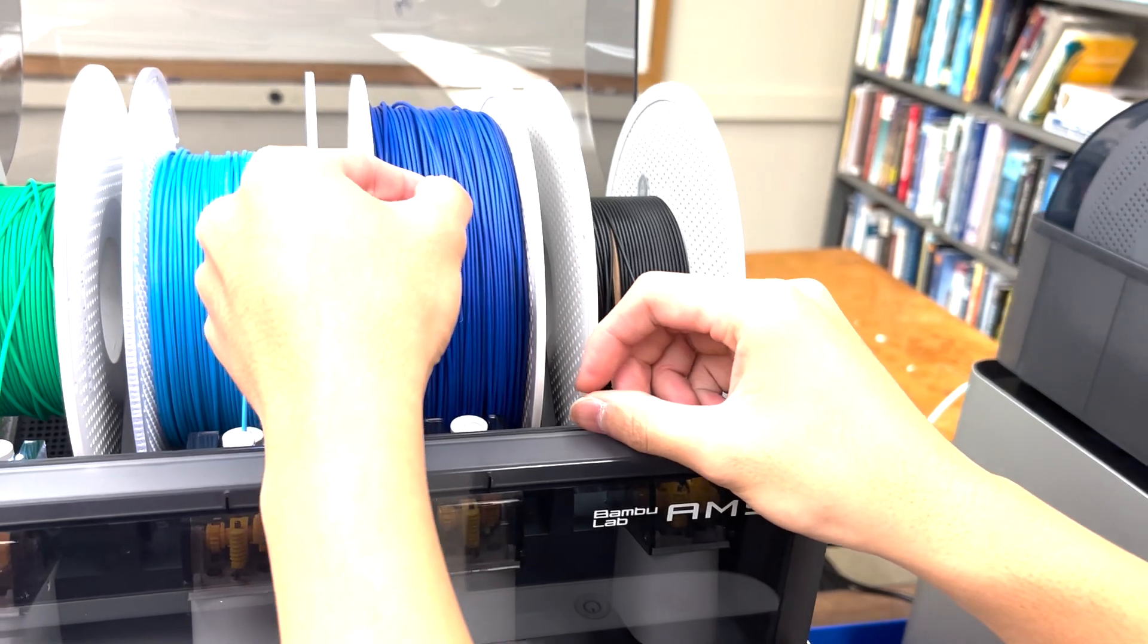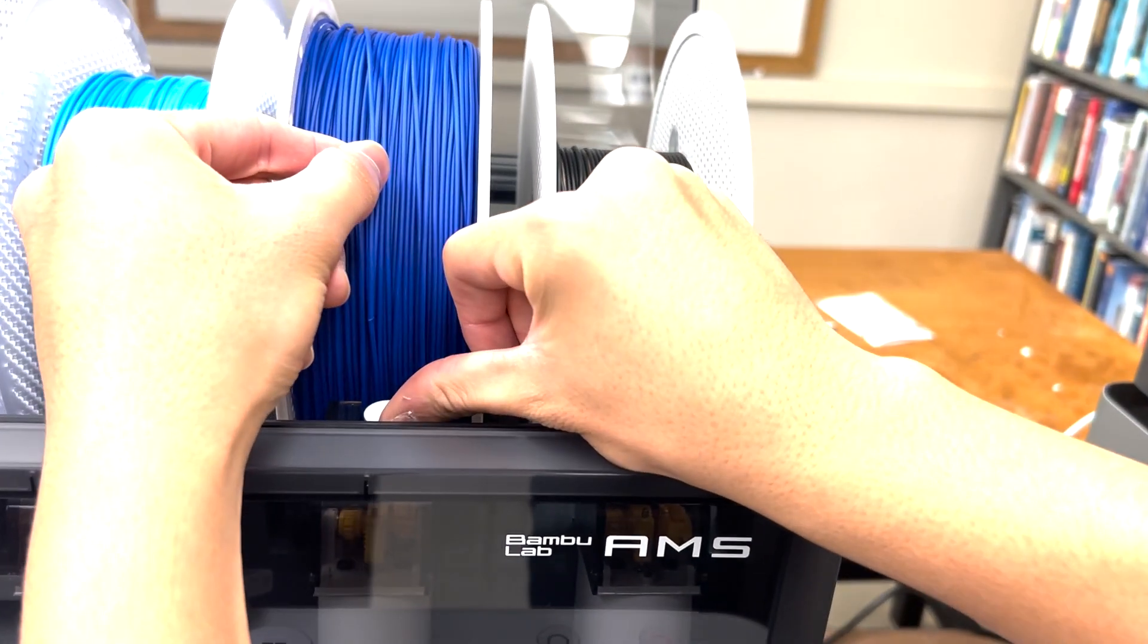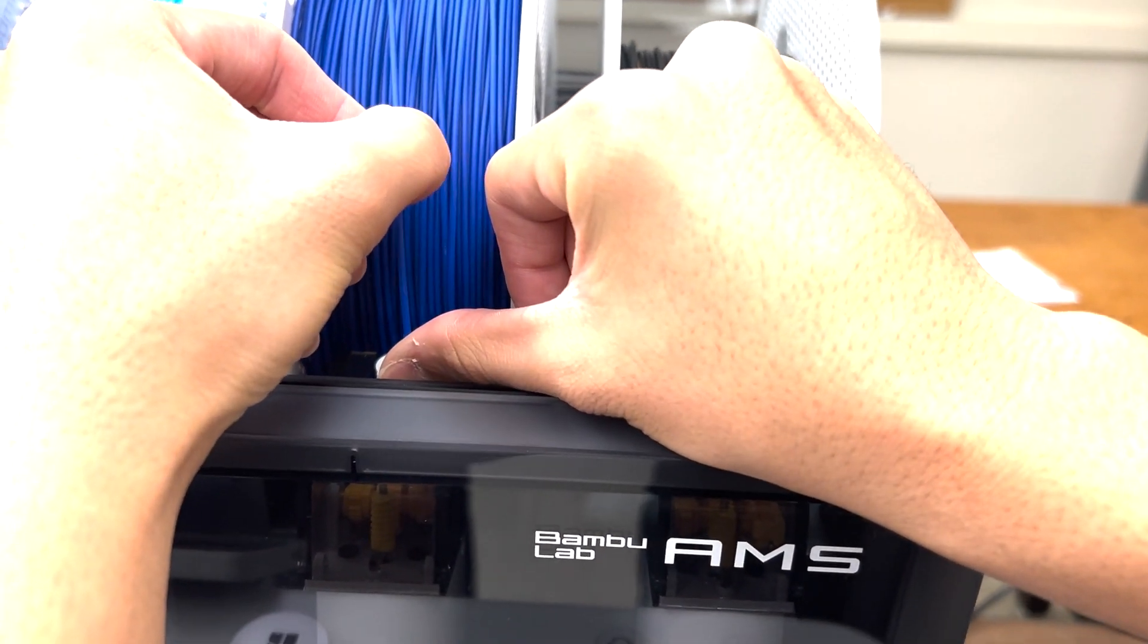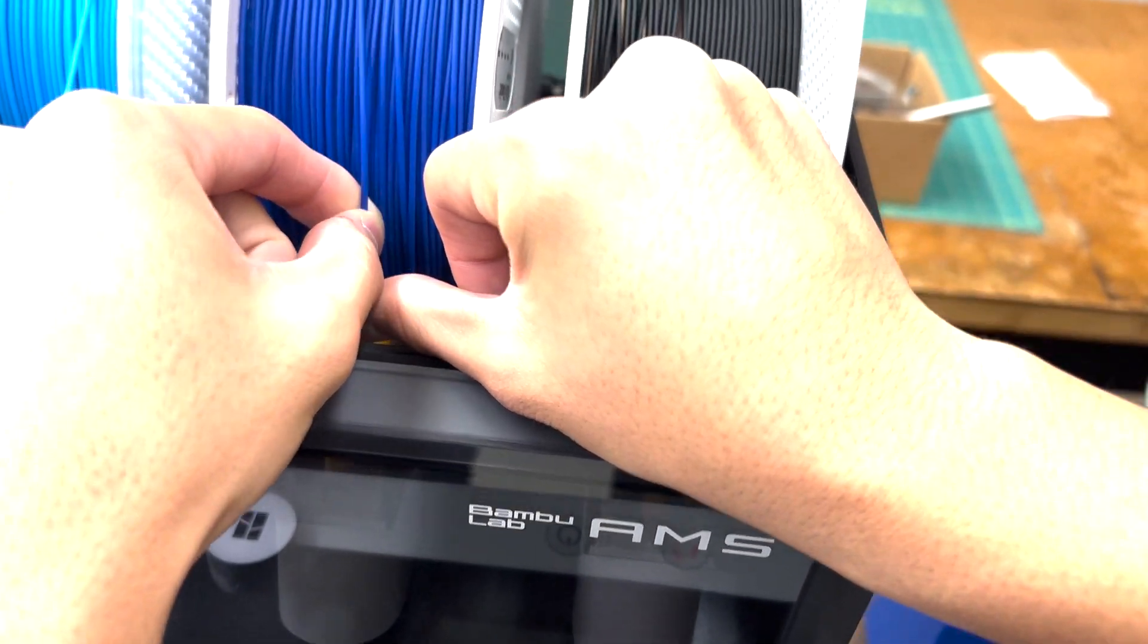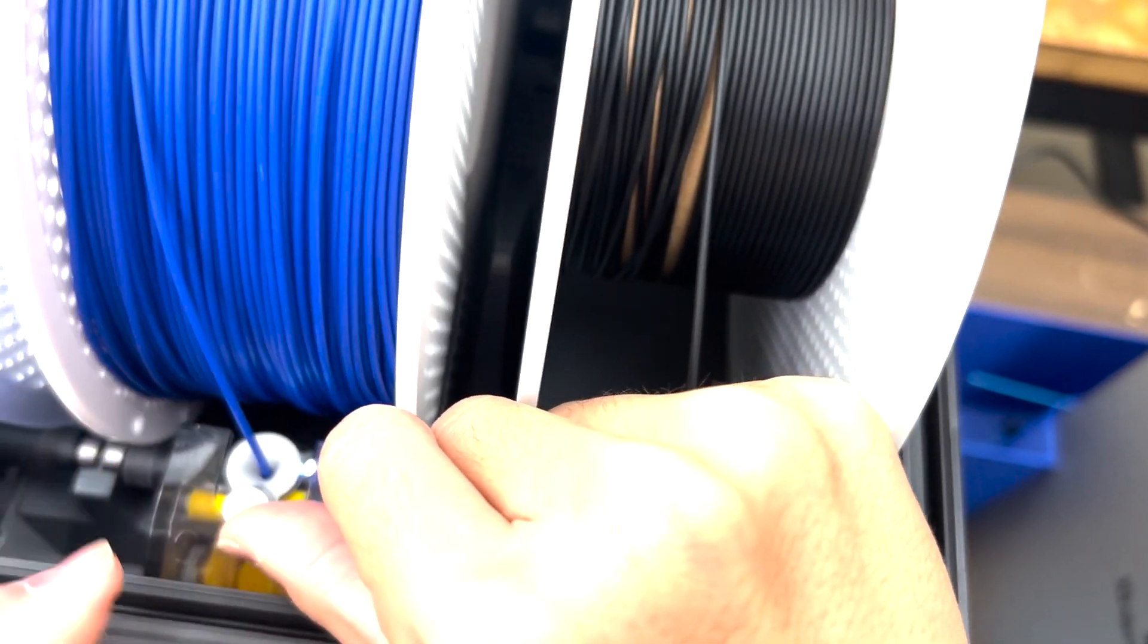And then you're just going to rotate the spool and lift this plastic white piece and insert your filament. And the AMS system should automatically grab the spool, just like that.